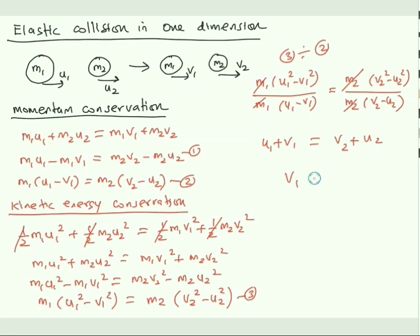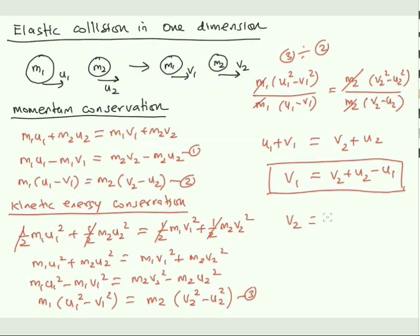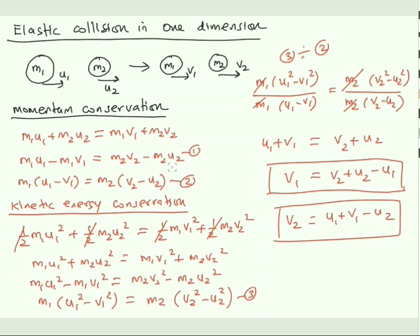So we get v1 + u1 = v2 + u2, which gives v1 = v2 + u2 − u1 for the final velocity of the first body, and v2 = u1 + v1 − u2 for the second. Substituting these expressions back into equation one gives the explicit final velocities for both bodies. Thank you, students.